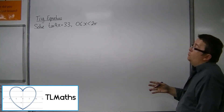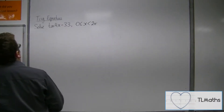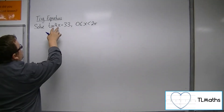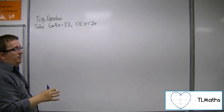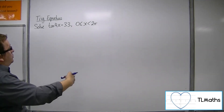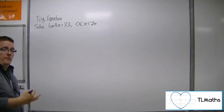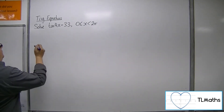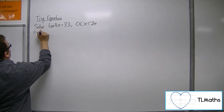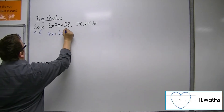In this video we'll solve tan of 4x equals 3.3 between 0 and 2 pi radians. This is a stretch by a factor of a quarter parallel to the x-axis, so the period of tan has been quartered. Tan usually has a period of pi, and so this has a period of pi over 4.